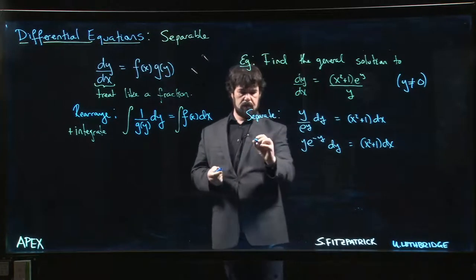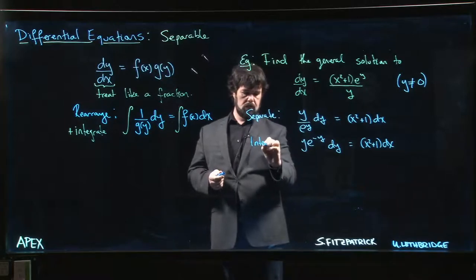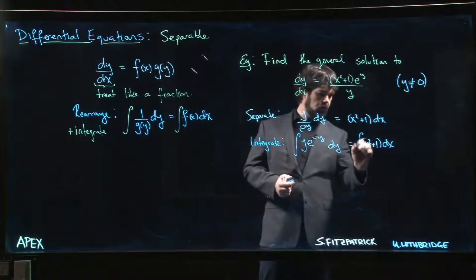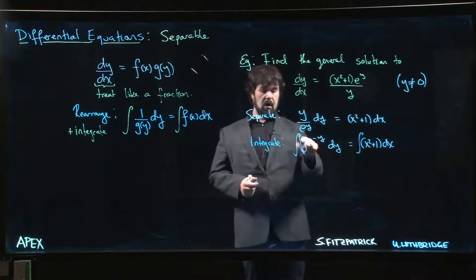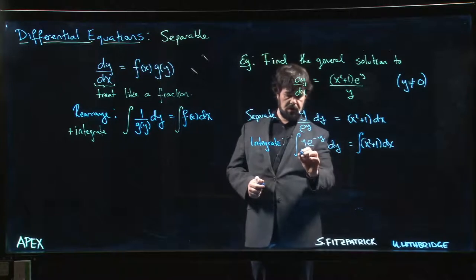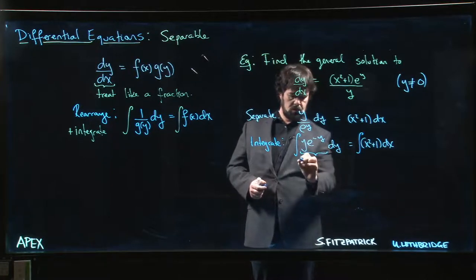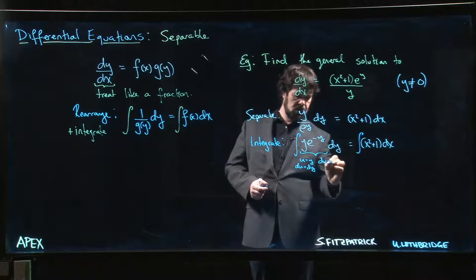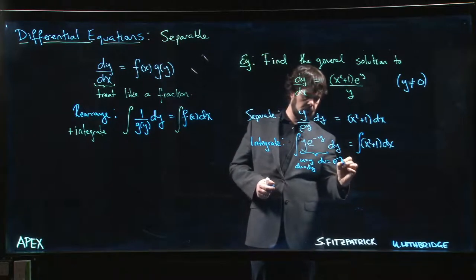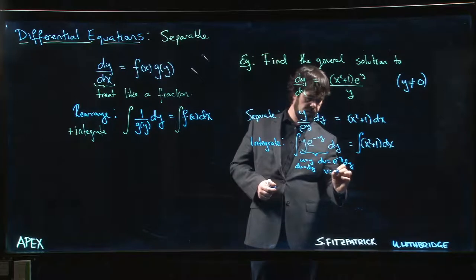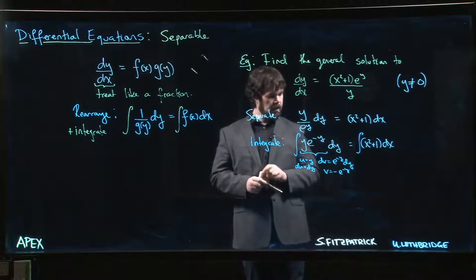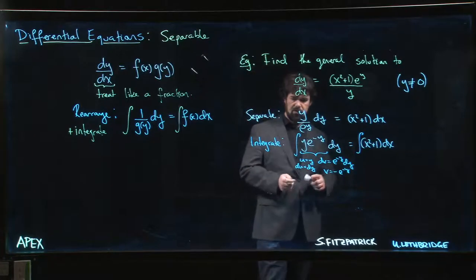Now we need to integrate both sides. This you probably recognize as something which requires integration by parts. So u equals y, du equals dy, dv equals e to the minus y dy, and v will be minus e to the minus y. Okay, so we carry out that integration.